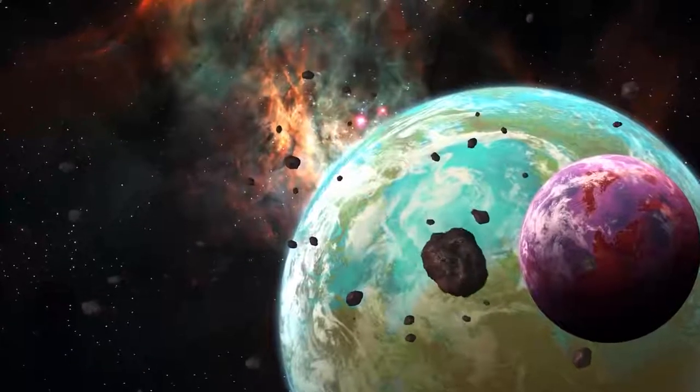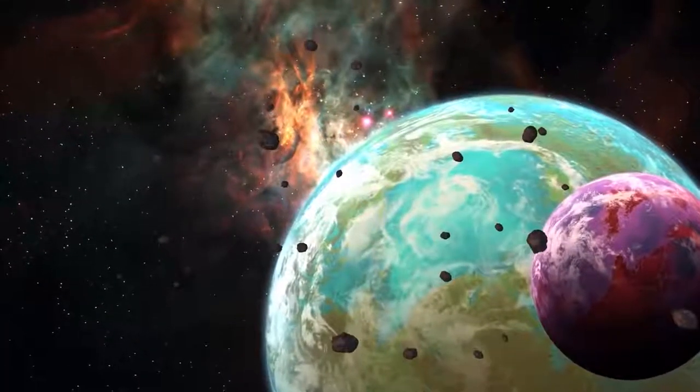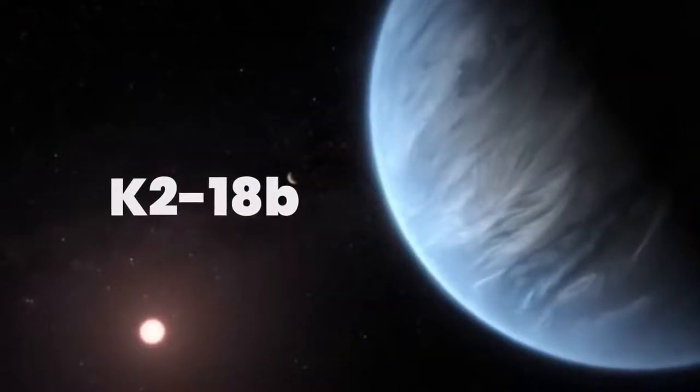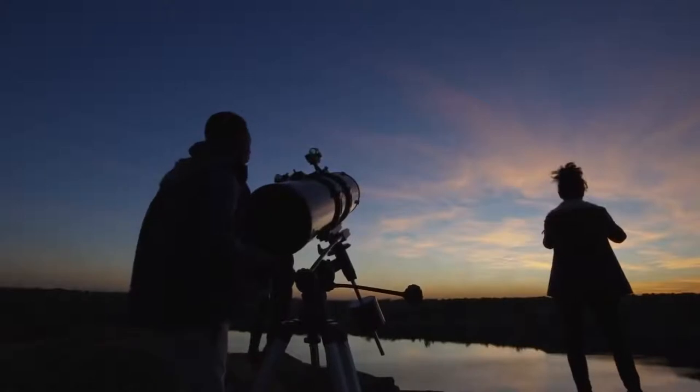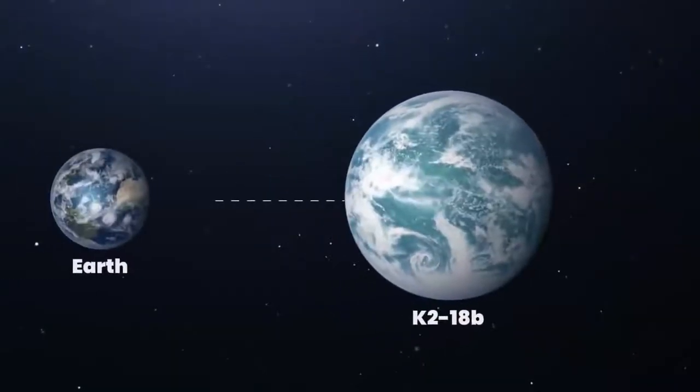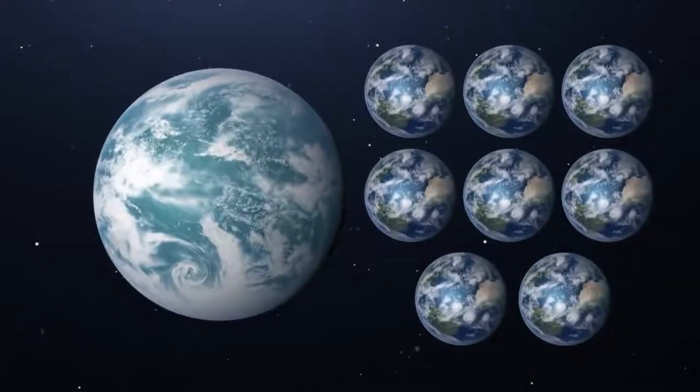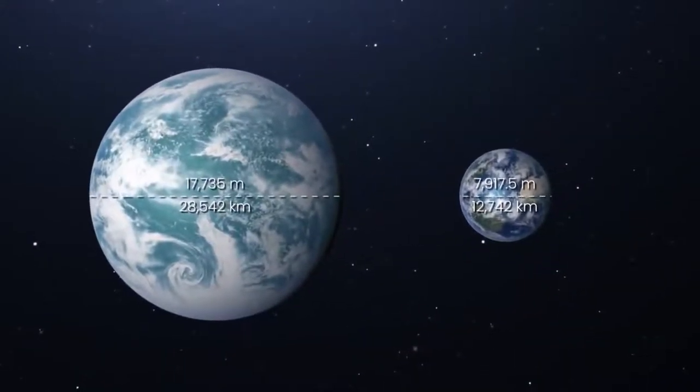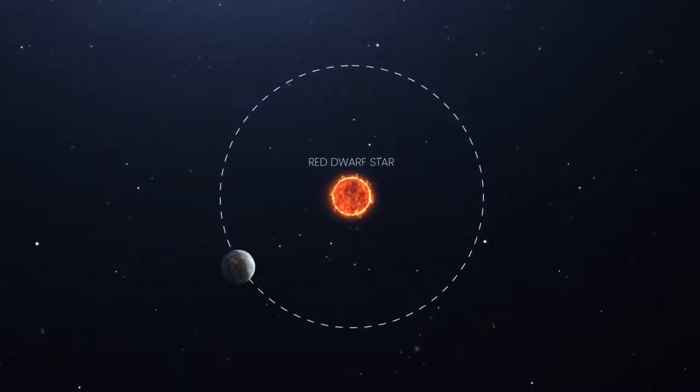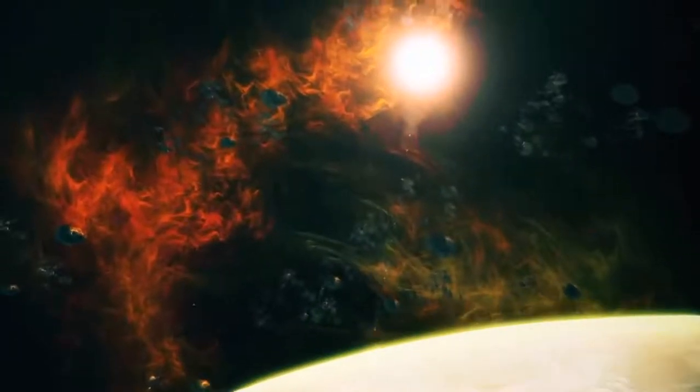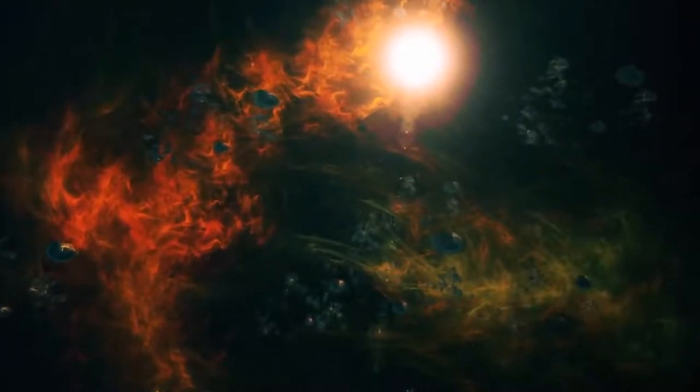One such exoplanet discovered by Kepler that has recently generated excitement among researchers is called K2-18b. In September 2019, two scientific teams independently announced that they found signs of liquid water in the planet's atmosphere. Situated 124 light-years away from Earth, K2-18b is about 8 times the mass of Earth and 3 times as big. It orbits a main-sequence red dwarf star called K2-18. A red dwarf star is the smallest, coolest star and by far the most common type of star in the Milky Way.